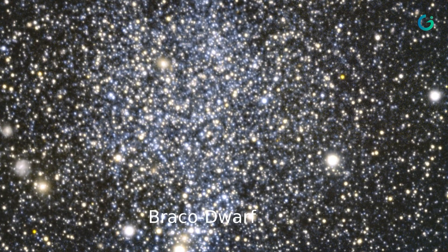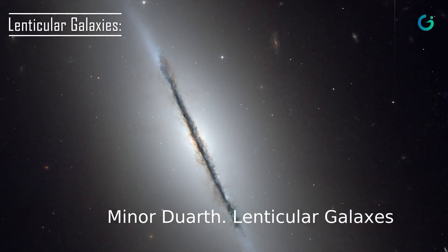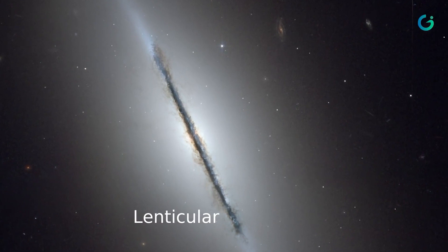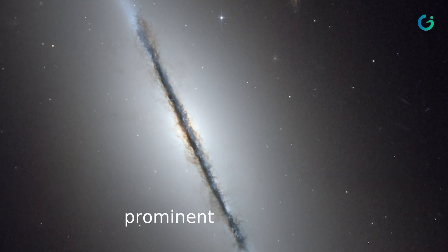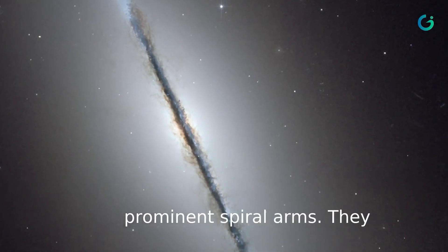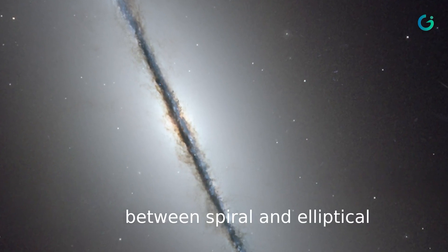Lenticular galaxies have a disc-like structure similar to spirals but lack prominent spiral arms. They are an intermediate form between spiral and elliptical galaxies. Examples include M85 and M84.